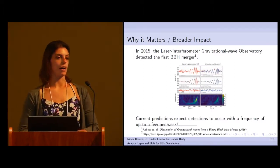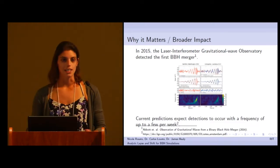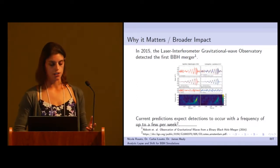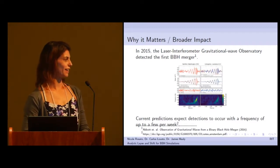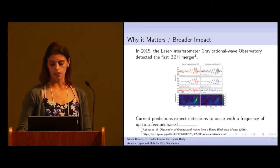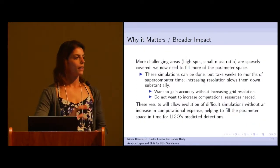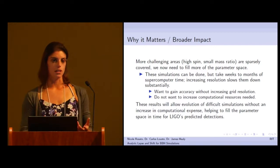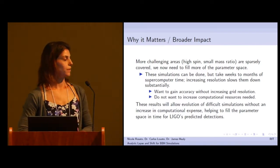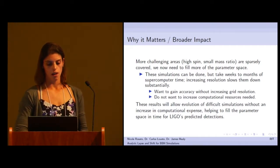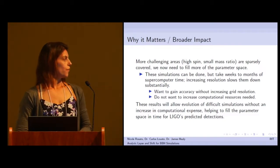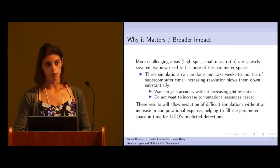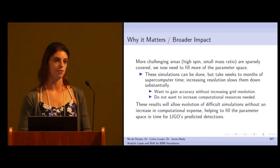So why does this research matter? Where does it fit in the broader context? In 2015, LIGO detected gravitational waves from a binary black hole merger for the first time. Current predictions expect these detections to occur with much higher frequency. We've covered a lot of the parameter space, but the more sparsely covered areas are those with high spin and small mass ratio. We want to be able to do these simulations for reduced computational cost, because currently they take weeks to months of supercomputer time. Increasing resolution slows them down substantially. These results will hopefully allow for evolution of more difficult simulations without increasing computational expense, and that will help fill the parameter space out just in time for LIGO's future detections.